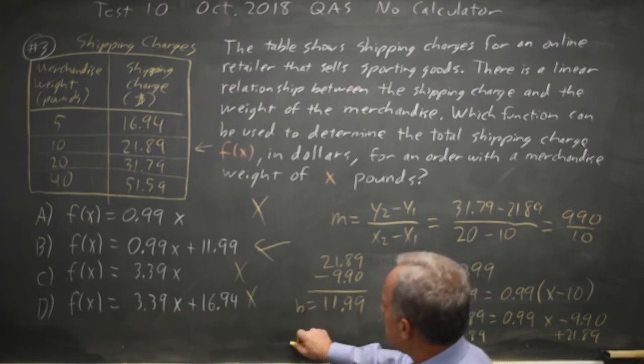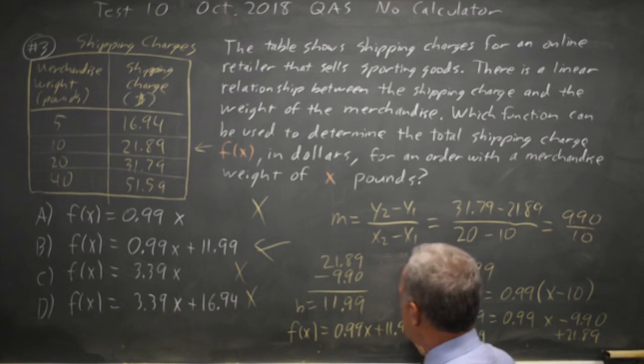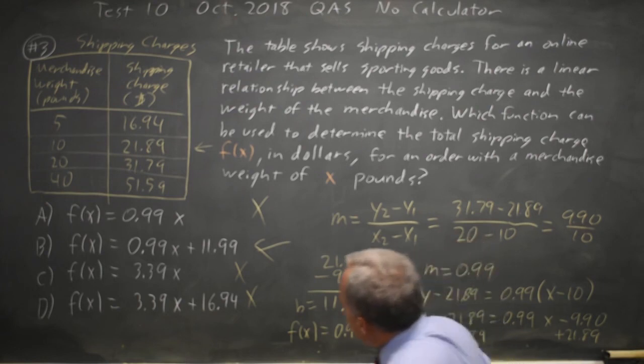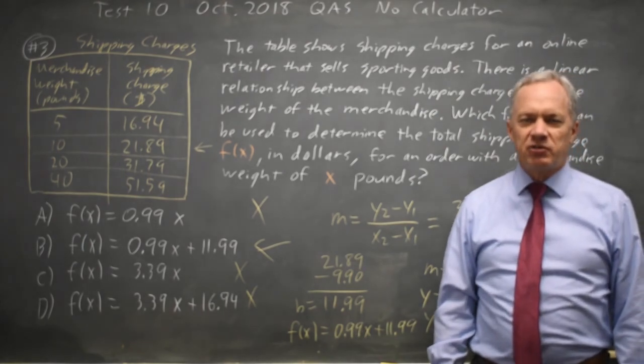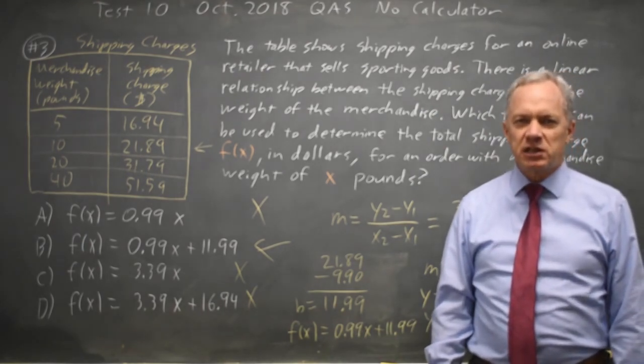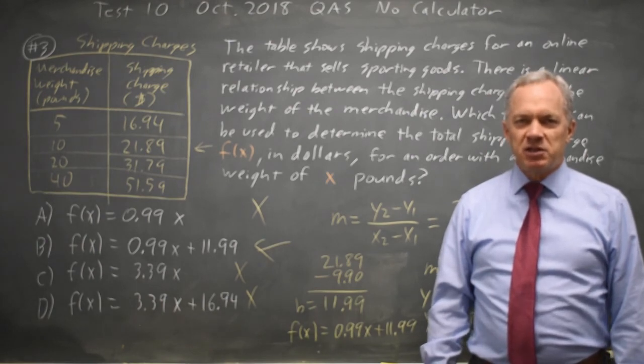So my equation is f of x equals mx plus b is 0.99x plus 11.99, which is choice B, but that was much harder than it needed to be. Remember, you're just trying to find the right answer, and it's one of four choices. You're not trying to find the equation from scratch. Come back soon for my next video. With math, there's always more.